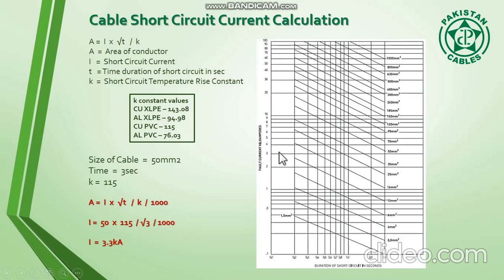On the x-axis, this is our kilo amperes value. We can see it falls between 3 and 3.5 kilo amperes. This is basically the value reading in kilo amperes. At 3 seconds we can assume that this is around 3.3 kilo amperes.